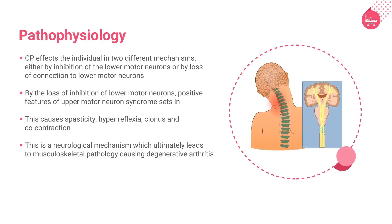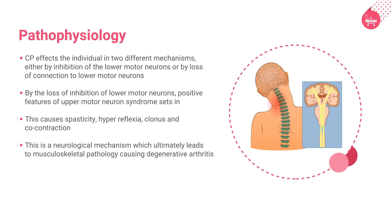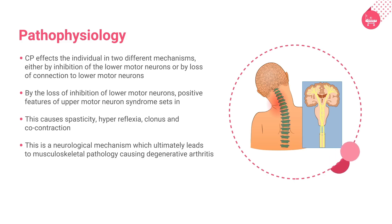Once the disease sets in, it affects the individual through two different mechanisms: either by inhibition of the lower motor neurons or by loss of connection to lower motor neurons. By the loss of inhibition of lower motor neurons, positive features of upper motor neuron syndrome set in, causing spasticity, hyperreflexia, clonus, and co-contraction.